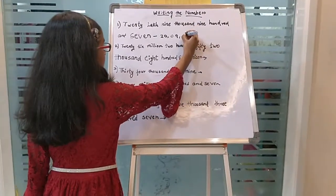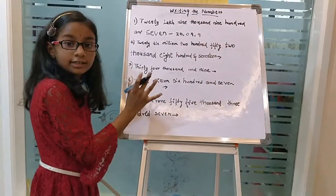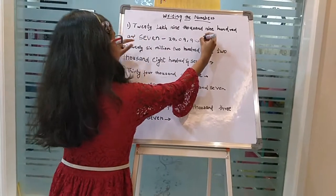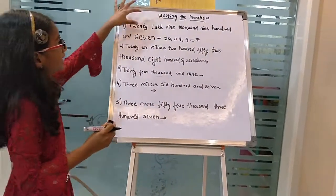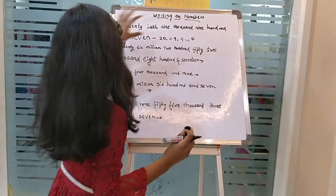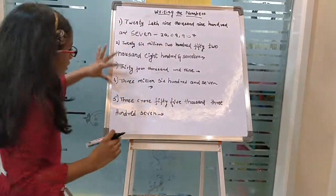Let's move on to the ones period - 900. But there is nothing in the tens place, so we need to keep 0 and 7. This is how we form the numbers. So we have 20 lakhs, 9000, 900 and 7. Let's do this now.